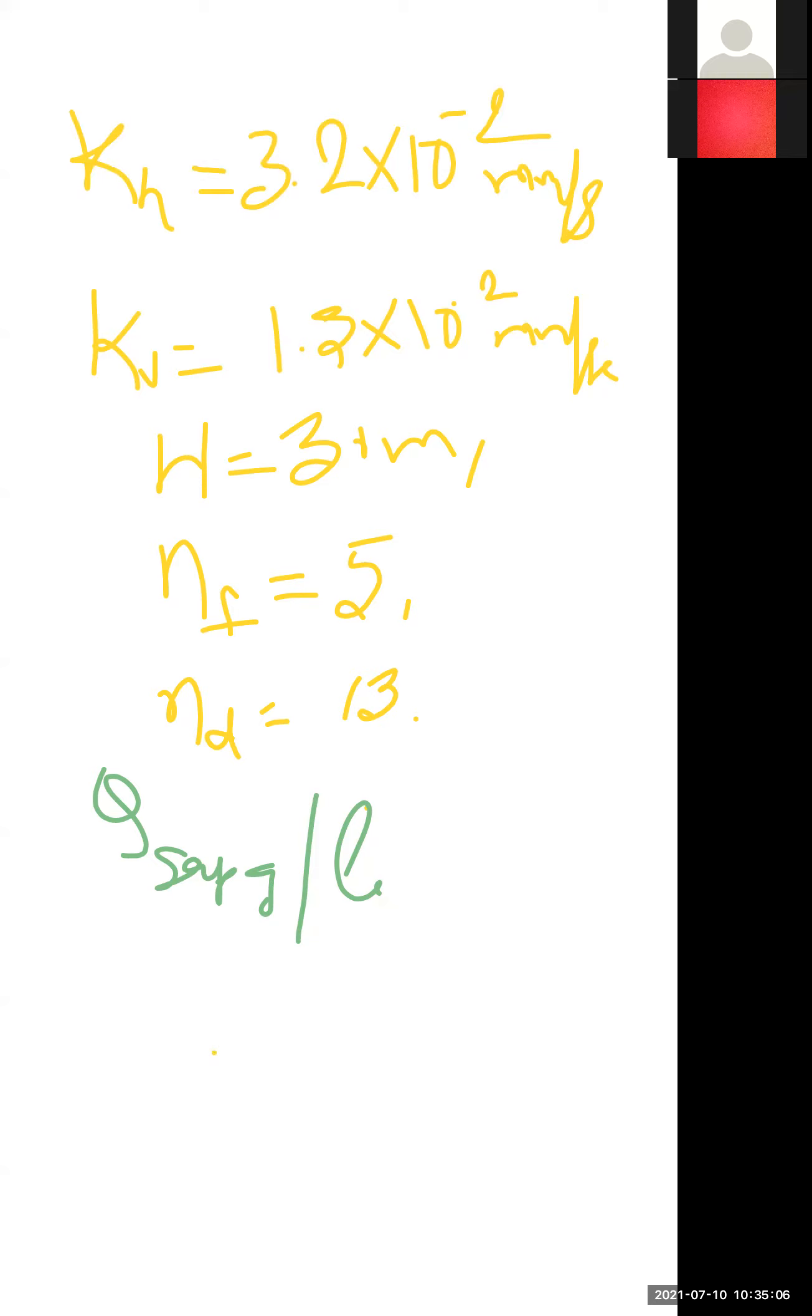For discharge of seepage loss, we can use the formula Q equal to K·H·NF by ND. But here KH is in both directions - horizontal direction and vertical direction. So first we have to find equivalent permeability.